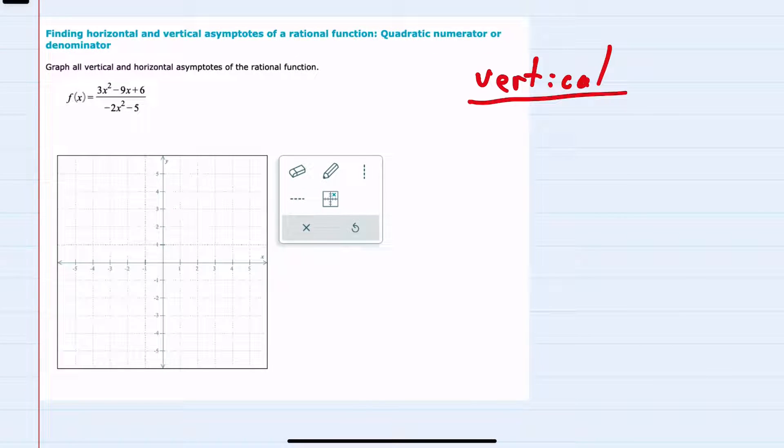To start, I'll recall that to find the vertical asymptotes, the first thing I want to do is make sure that our function f(x) is in its simplest form. So can I, for example, factor and then cancel factors in the numerator and the denominator?